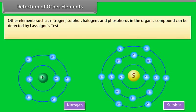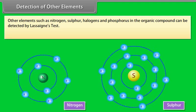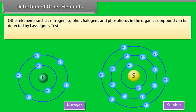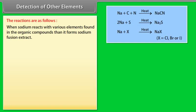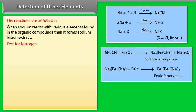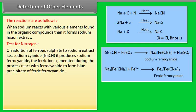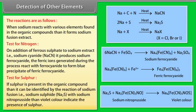Detection of other elements — nitrogen, sulphur, halogens, and phosphorus in an organic compound can be detected by Lassaigne's test. The elements fuse with sodium metal to form a sodium fusion extract. For nitrogen: on addition of ferrous sulphate to the sodium extract (sodium cyanide), it produces sodium ferrocyanide. The ferric ions generated react with ferrocyanide to form a blue precipitate of ferric ferrocyanide. For sulphur: the reaction of sodium fusion (sodium sulphide, Na₂S) with sodium nitroprusside gives a violet colour, indicating the presence of sulphur.